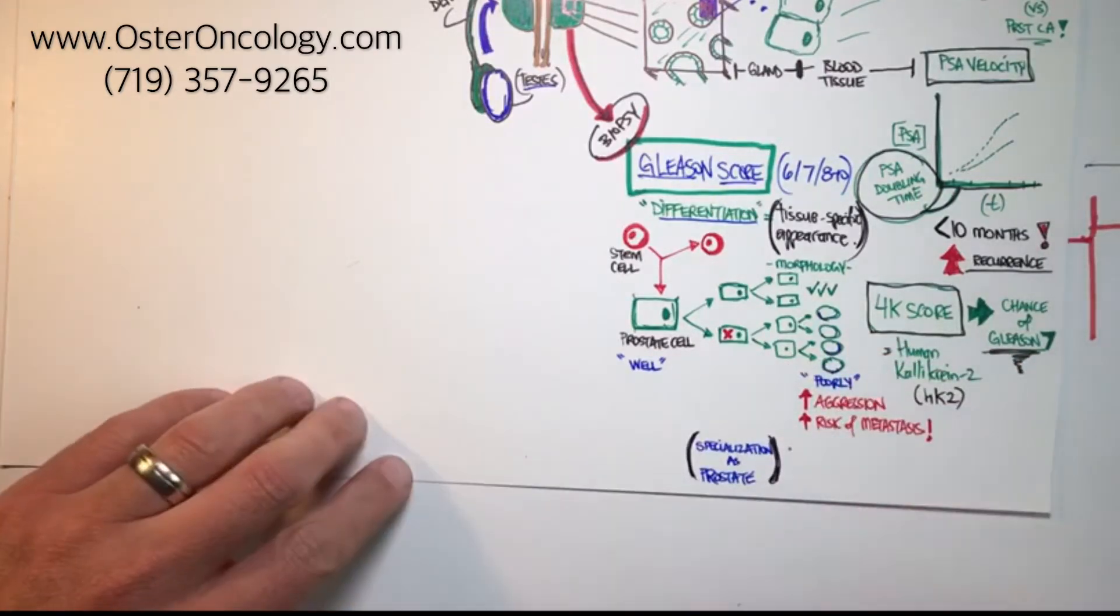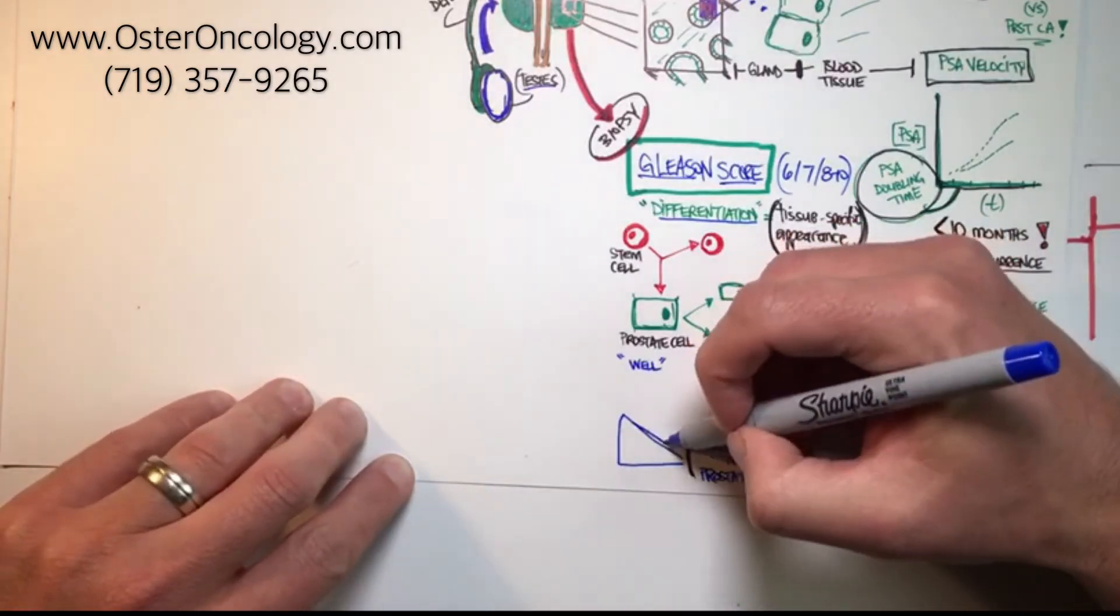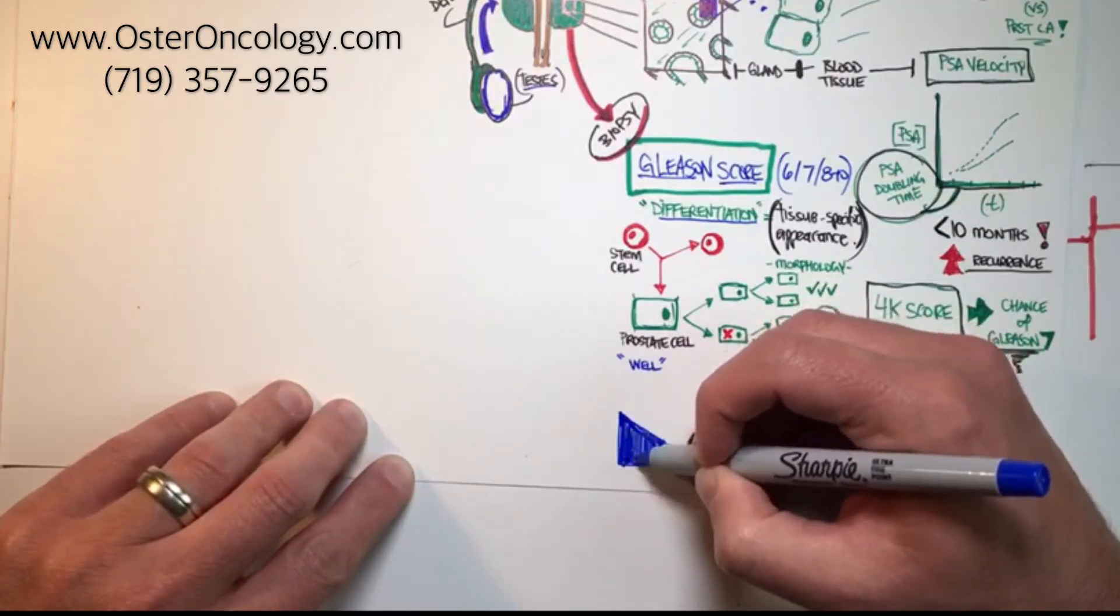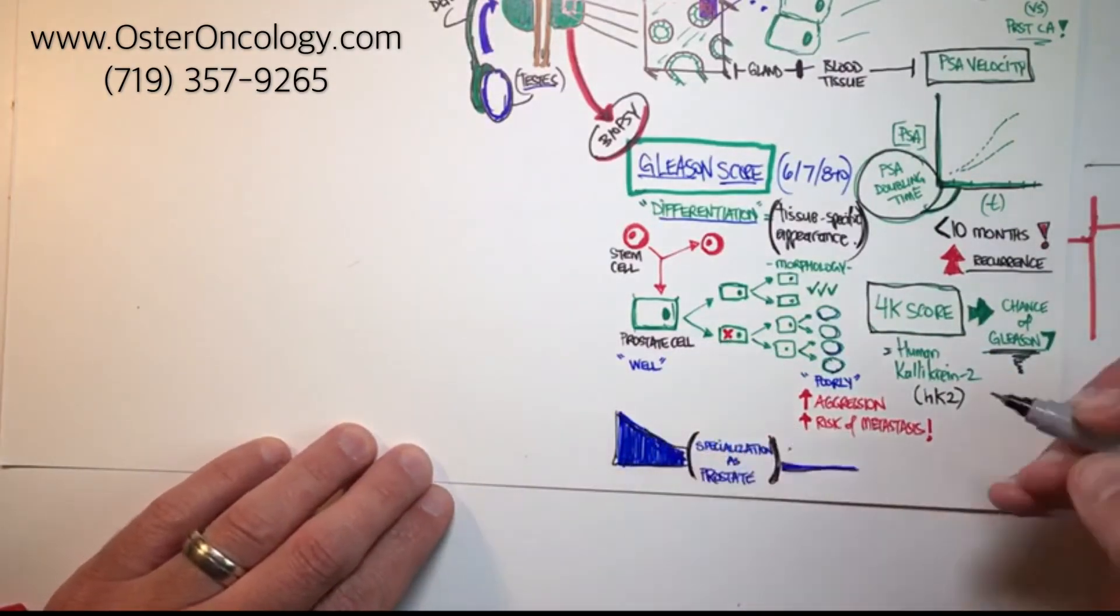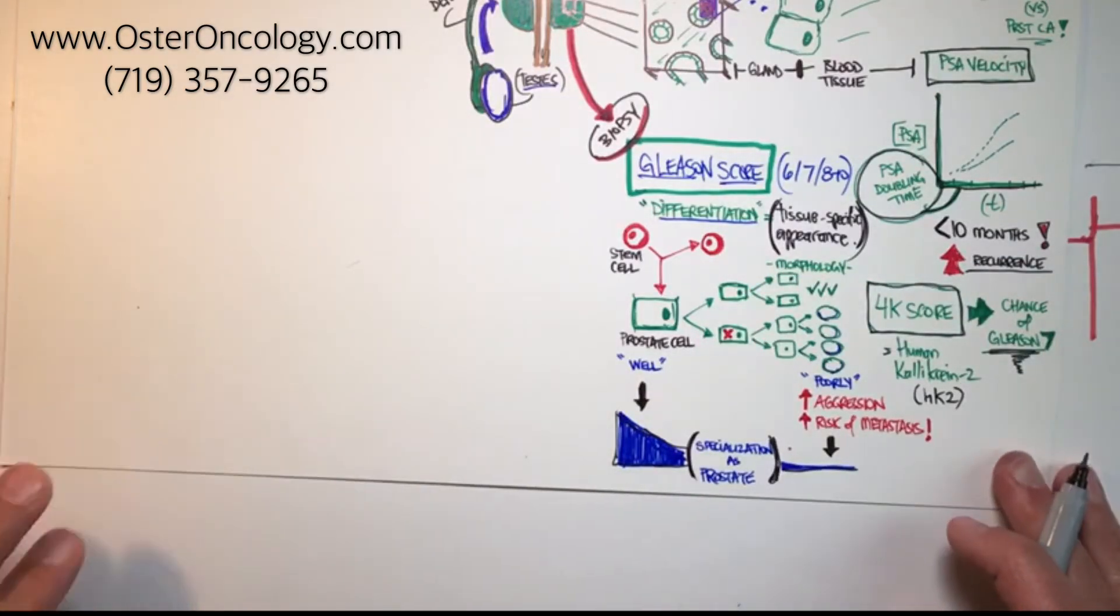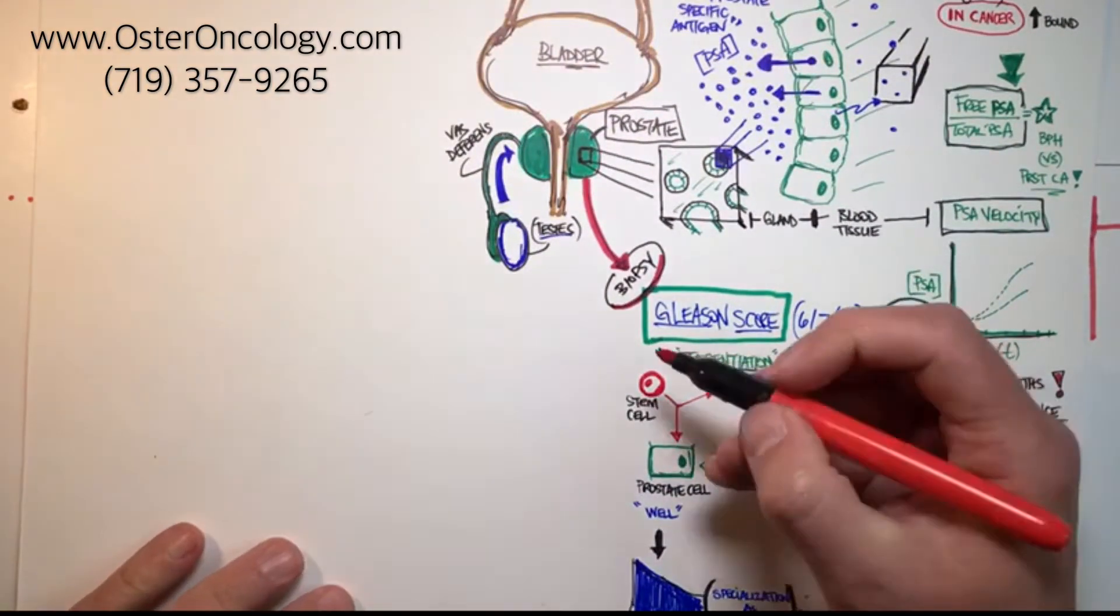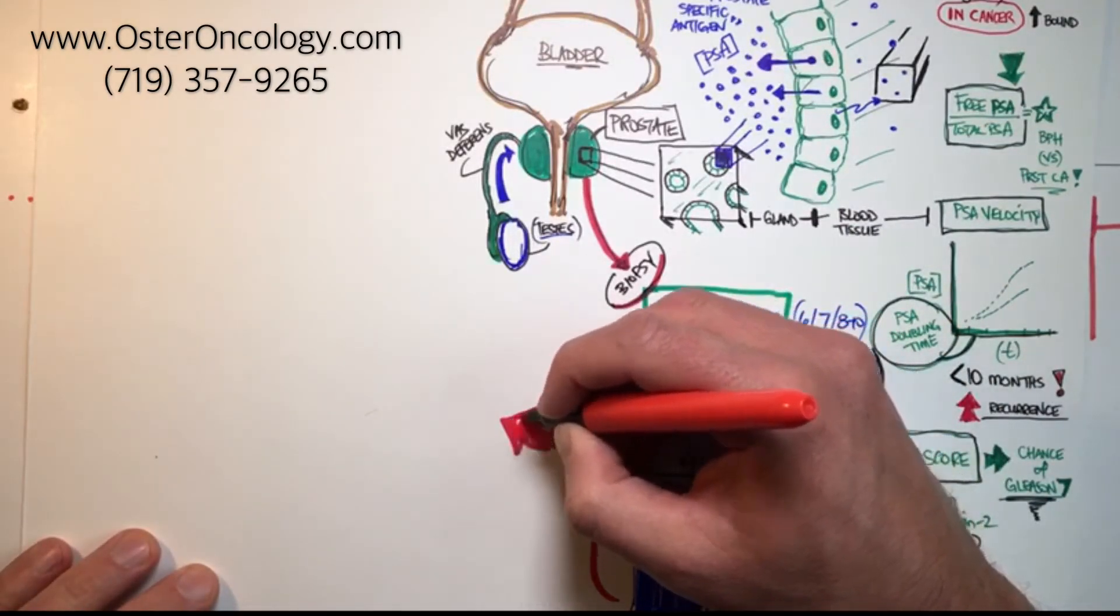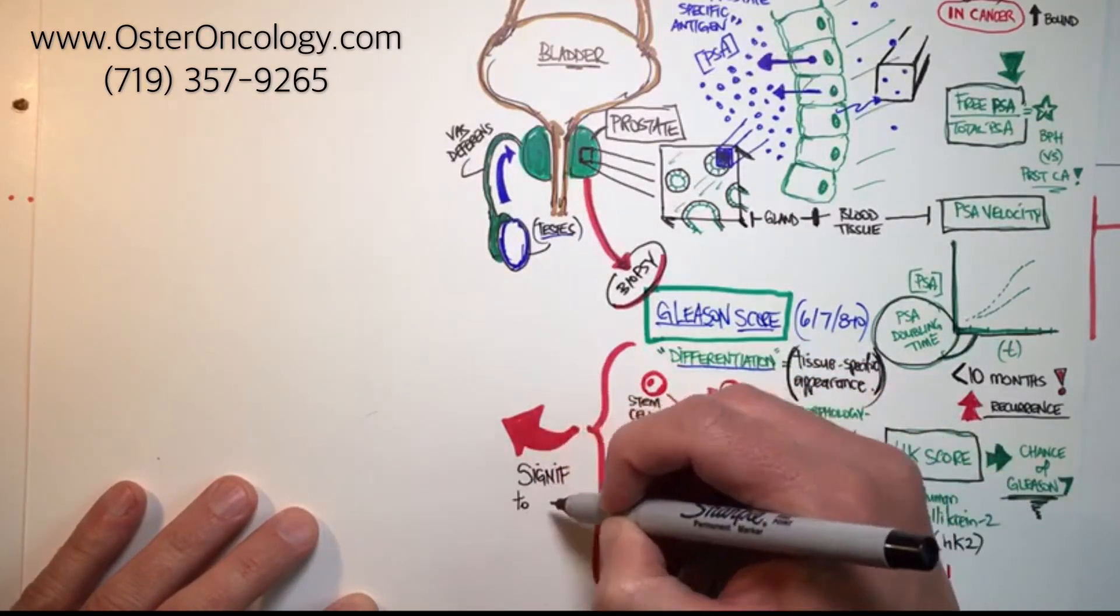So again, this is tissue specific appearance, we can also call this the specialization of the cell towards its role in the prostate. So to the left, again looking above at the shape of the cells, we have highly specialized cells which is healthy and good, again this is called well differentiated, and we have poorly differentiated on the right. So a Gleason score will increase the more poorly differentiated a cell appears, so a higher score with Gleason is worse than a lower score with Gleason. So a six, Gleason six, is prognostically better than a Gleason eight, nine or ten for instance. Okay, so what is the significance to treatment here then?